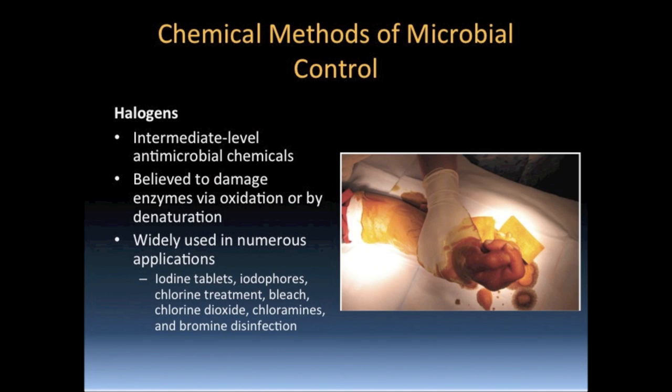Chlorine, like iodine, has been employed for both disinfection and for antisepsis. Chlorine may be used in its liquid form, gaseous form, or may be used as part of a compound such as hypochlorites or chloramines. Chlorine and chlorine compounds work in the same way to damage proteins as iodine — they cause the oxidation of disulfide bonds, which in turn causes the proteins to denature. Chlorine has been used to disinfect wastewater, drinking water, and swimming pools. Chlorine compounds are widely used for numerous applications as disinfectants in the medical field, industry, and in households. You are likely familiar with the chlorine compound known as sodium hypochlorite, or household bleach.